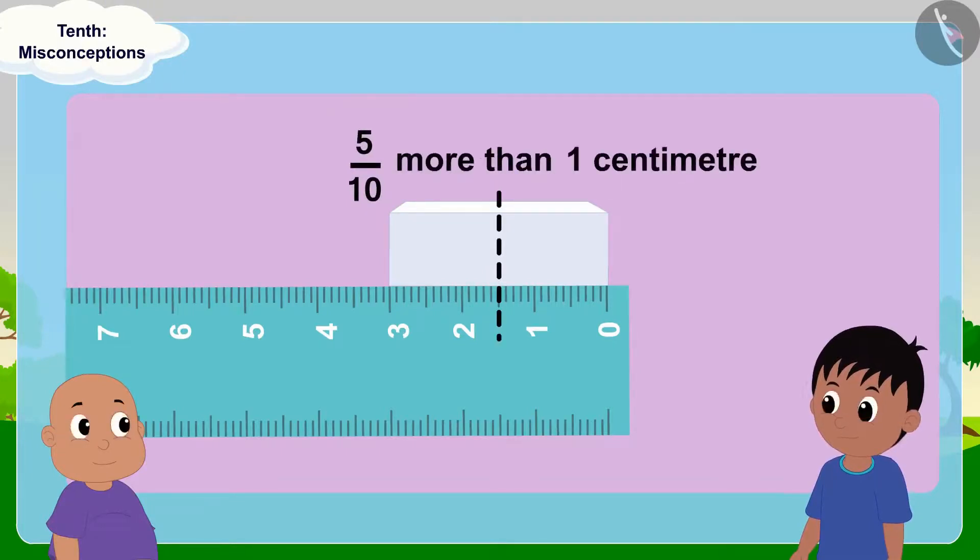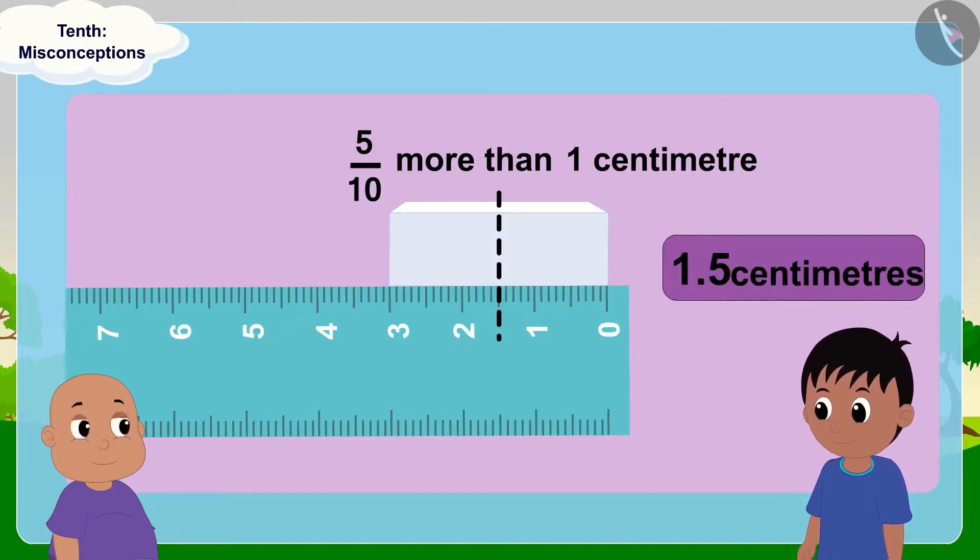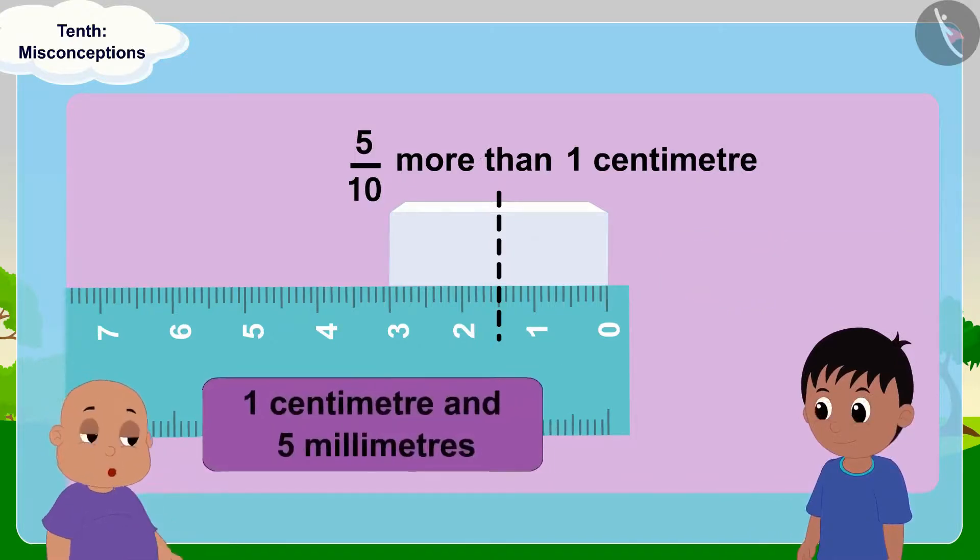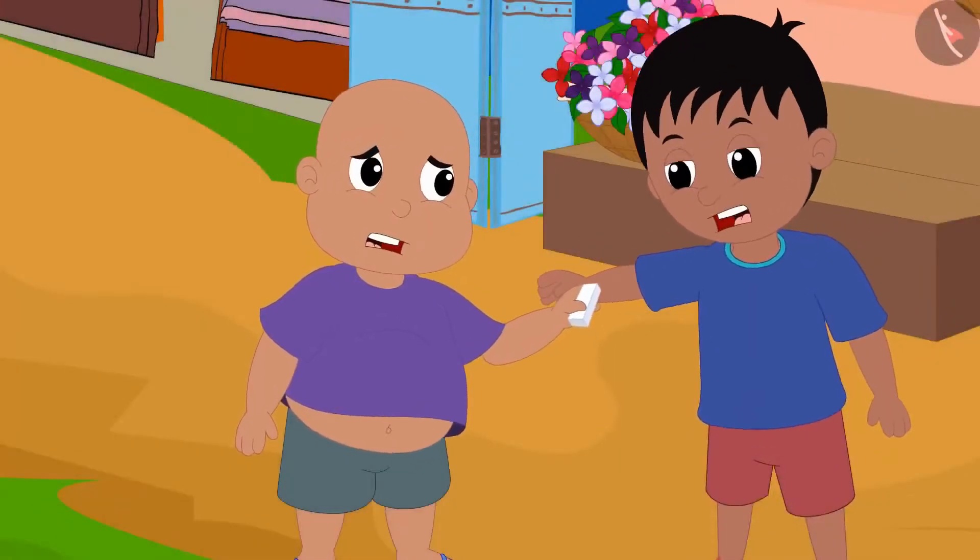Raju immediately said, Babalu, half of the eraser is 1.5 centimeters long. No, half of the eraser is 1 centimeter and 5 millimeters long. Babalu told Raju. Both Raju and Babalu started quarrelling.